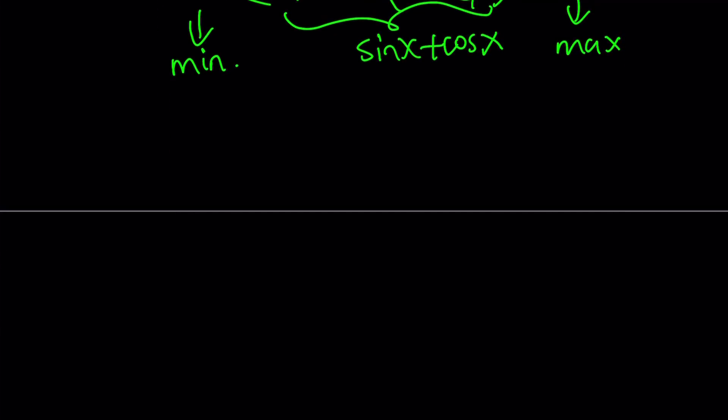Once we establish that, we can kind of talk about the solution method here. Let me rewrite the equation: sin(cos x) equals cos(sin x). To be able to solve this equation, I'm going to use a well-known fact in trigonometry. If two angles are complementary, such as alpha and beta,